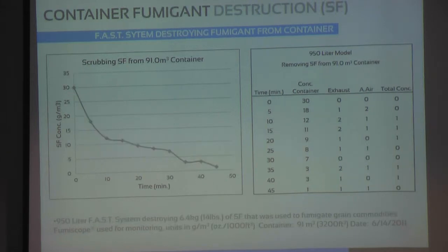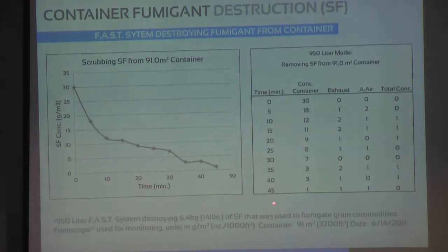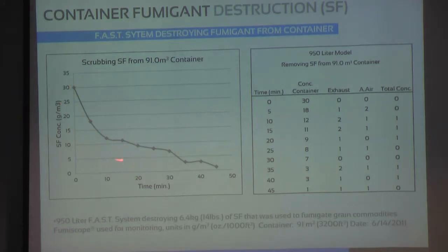Right after that container scrub, we did one the exact same size with SF — back to back, we completed these. We started out with 14 pounds of SF used to fumigate grain commodities. Once it was completed, we turned the scrubber on. It started at 30, and within 10 minutes we were at half of that initial concentration. Within about 45 minutes, we were down to one to zero, and had successfully removed that fumigant out of that container.